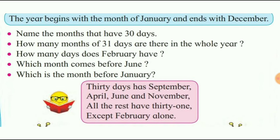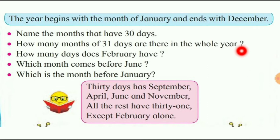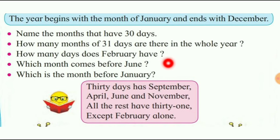How many months of 31 days are there in the whole year? पूरे साल में कितने महीने हैं जिनमें 31 days होते हैं? The answer is 7 months. Calendar पे आप count कर सकते हो. How many days does February have? February has 28 and 29 days — कभी 29 होते हैं और कभी 28 होते हैं.